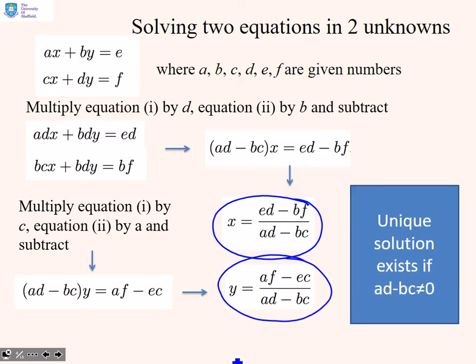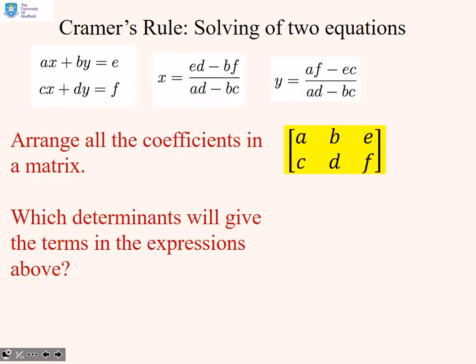It was also noted that a unique solution exists if and only if the denominator ad - bc is not equal to zero. This is just a reminder because we have these two expressions and we want you to be confident where they've come from.